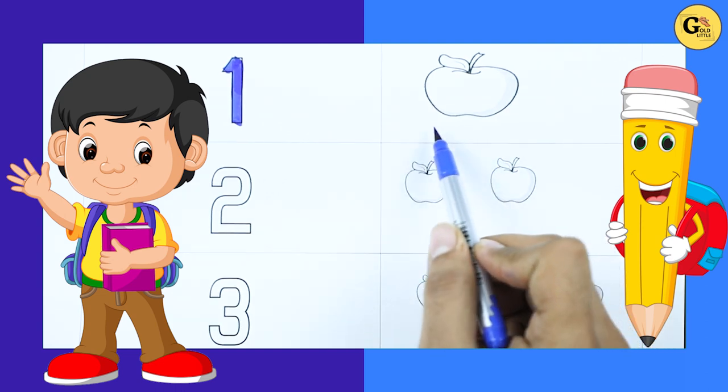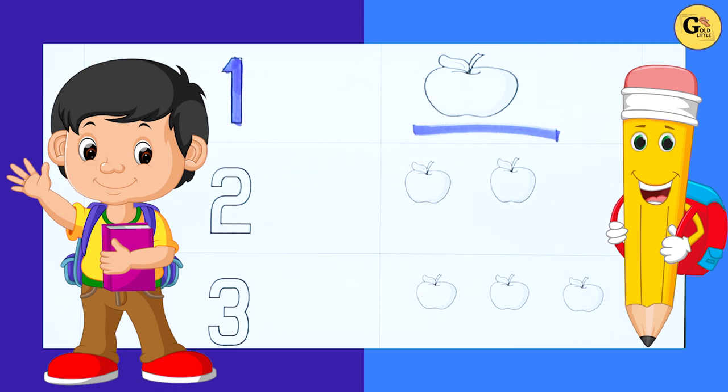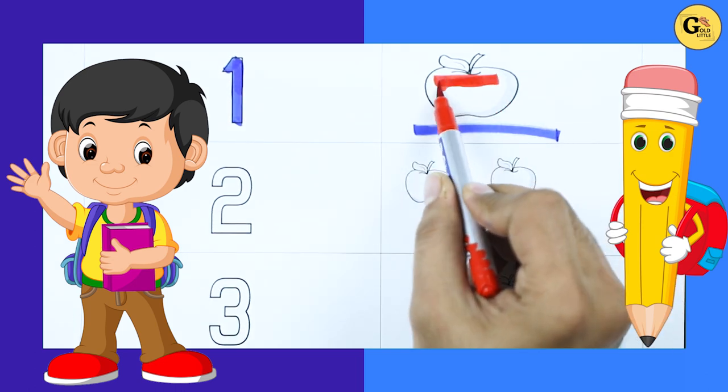It's number 1. How many apples here? Tell me. Yes, 1 apple. Apple color is red. Yeah.